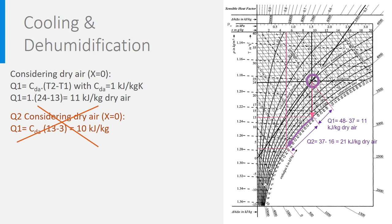Let's consider the full equation for the enthalpy. We can derive easily that H2 equals 37 kJ, while H1 is 15.5 kJ per kilogram. The needed heat is therefore the difference, which is a bit more than 21, very similar to what we found in the diagram.